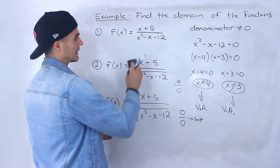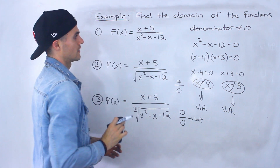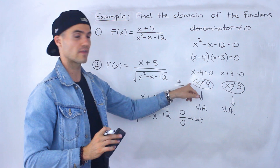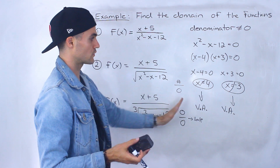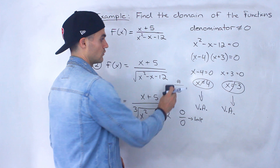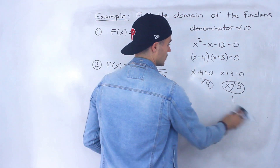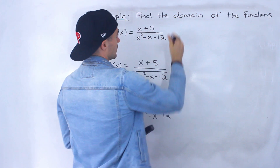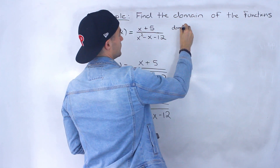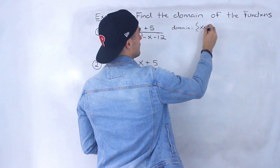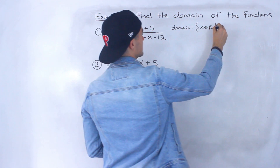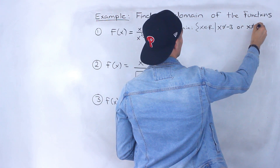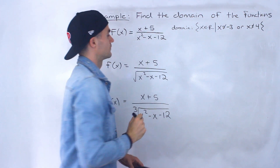If we had x minus 4 in the numerator, that factor would cancel out, and at x equals 4 there would be a hole instead. But either way — whether it's a vertical asymptote or a hole — x cannot equal 4. So the domain is: x can be anything, however x cannot equal negative 3 and x cannot equal positive 4.